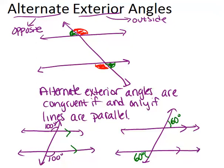Alternate exterior angles exist even if the lines are not parallel. In a situation where lines are not marked as parallel, those are still alternate exterior angles, but we don't know whether or not they are congruent. We tend to focus on situations where the alternate exterior angles are congruent or where the lines are parallel, because that's when we have the interesting property of those two things having to happen at the same time.